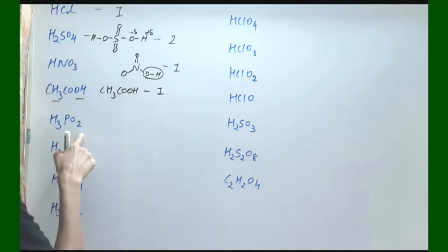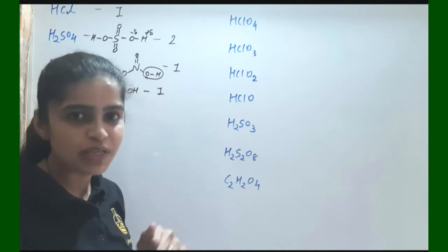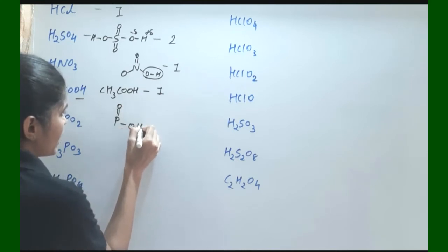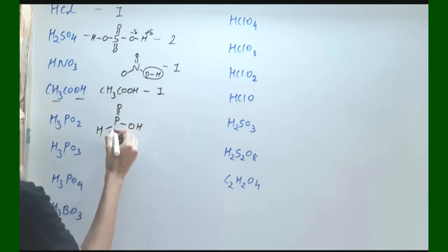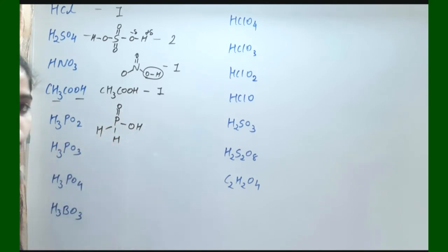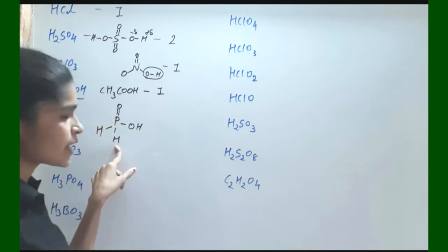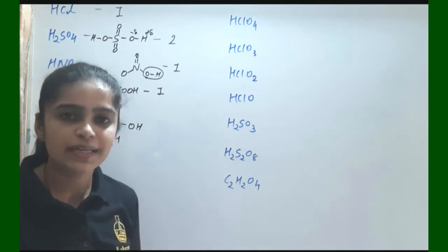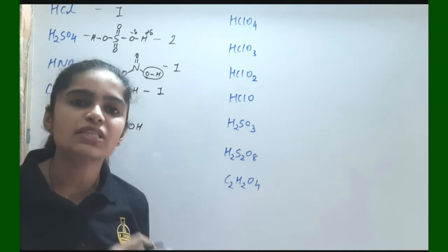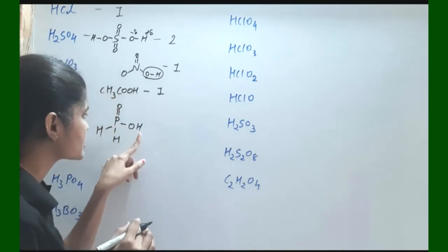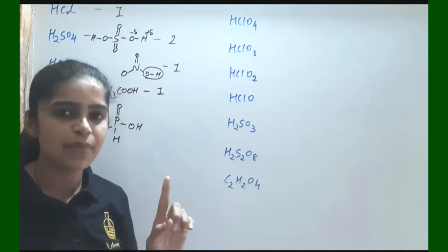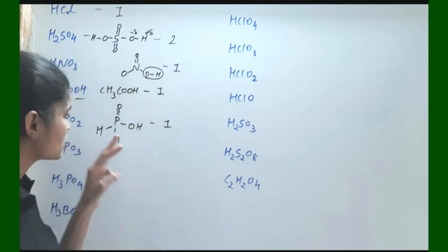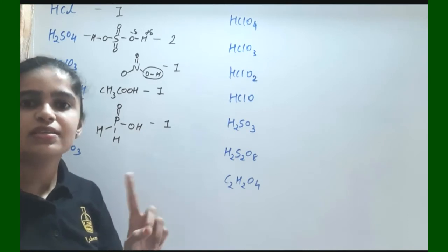Next is H₃PO₂. You might think 3 hydrogen present, so basicity is 3. No — the structure is P with double bond O, OH, and H. The phosphorus–hydrogen bond is a strong bond with no significant electronegativity difference. Only the O–H bond has a large electronegativity difference between oxygen and hydrogen, so only that hydrogen is easily replaceable by base. So H₃PO₂ has basicity equal to 1, not 3.